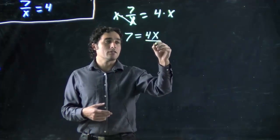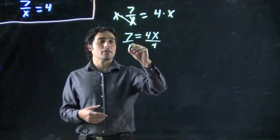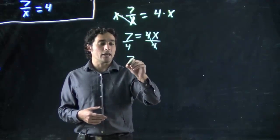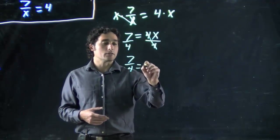Well, it's multiplying by 4, divide by 4. Divide by 4. These will cancel, and I've got 7 over 4 equals x.